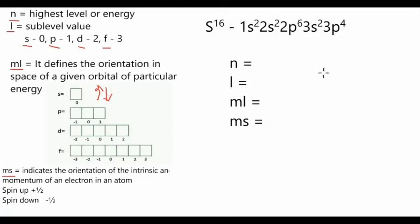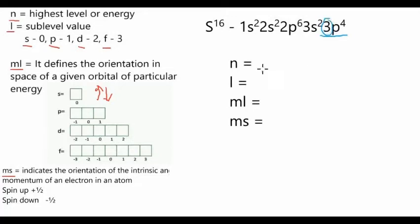Our next example is sulfur, which has an atomic number of 16. First we get the electron configuration. Next we find the quantum numbers. For the principal quantum number, we look at where the electron configuration ends — it ends at 3p4. So our n is 3, which is the highest level or energy. For the sublevel value, we ended in letter p, so our l is 1.